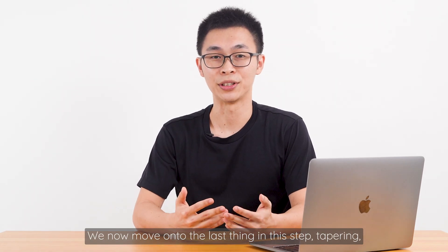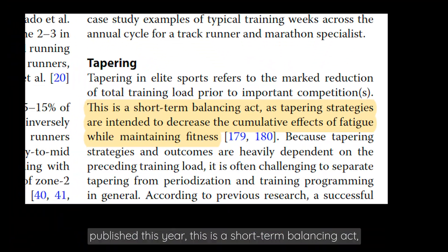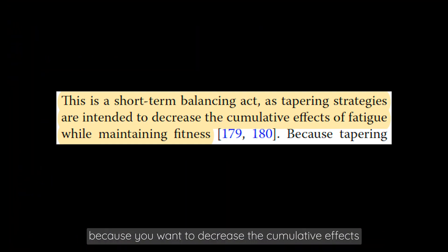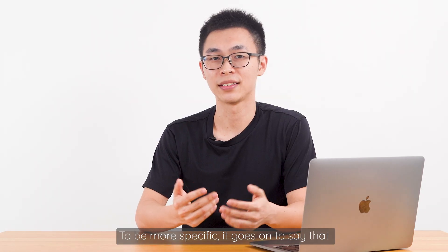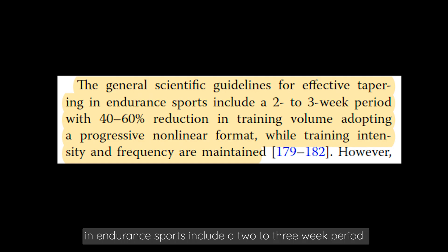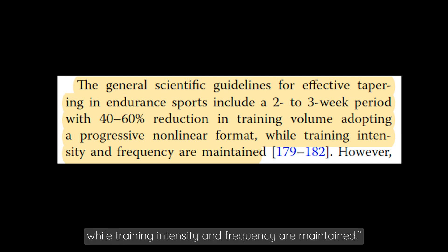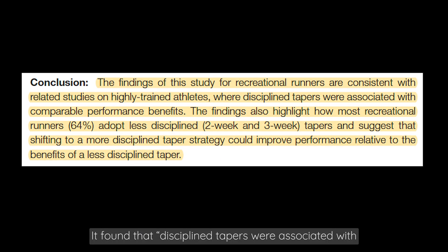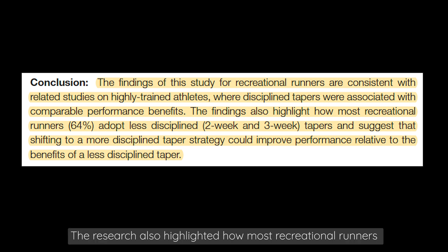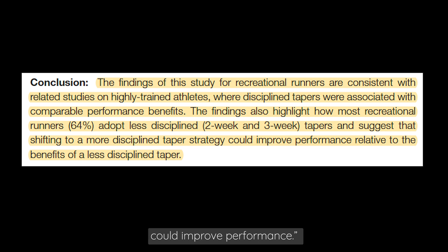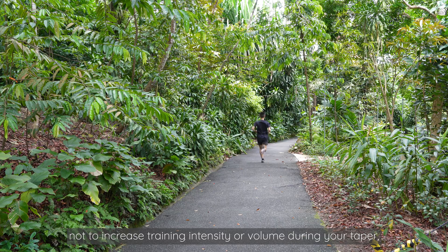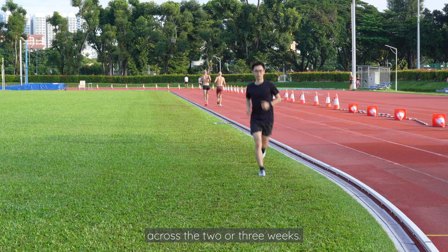We now move on to the last thing in this step: tapering, which means the reduction of total training load prior to important competitions. As noted in the review of world-class athletes published this year, general scientific guidelines for effective tapering in endurance sports include a 2–3 week period with a 40–60% reduction in training volume, adopting a progressive, non-linear format while training intensity and frequency are maintained. A 2021 study backed this up, finding that disciplined tapers were associated with comparable performance benefits, and that most recreational runners adopt less-disciplined tapers — suggesting that shifting to a more disciplined taper strategy could improve performance. The takeaway: do not increase training intensity or volume during your 2–3 week taper, no matter how tempting.